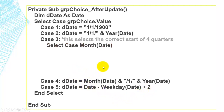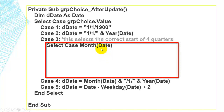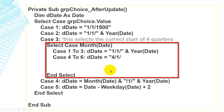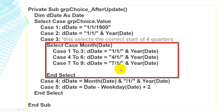Case 3 is itself another select case statement based on the month of today's date. Cases 1, 2, and 3 — January through March — give the beginning of the first quarter: one slash one slash year. The beginning of the second quarter is four slash one slash the year of today's date. Then the beginning of the third quarter, and the beginning of the fourth quarter follow similarly.